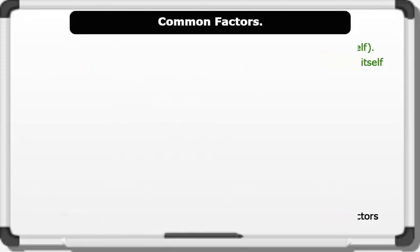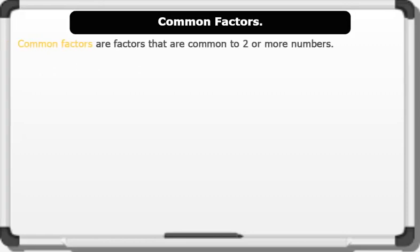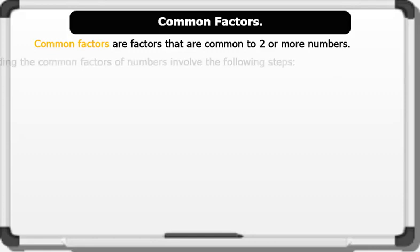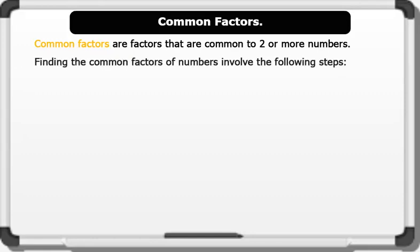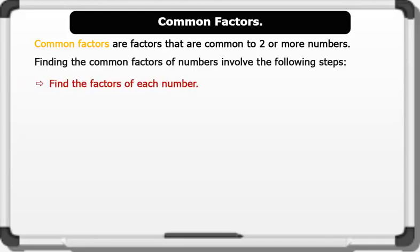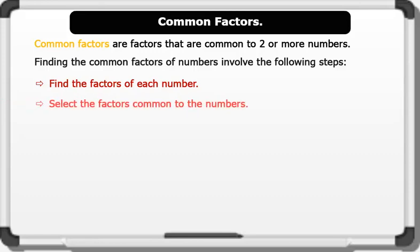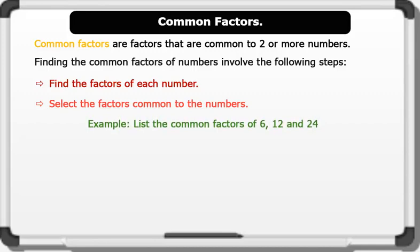Common Factors. Common factors are factors that are common to 2 or more numbers. Finding the common factors of numbers involves the following steps: 1. Find the factors of each number. 2. Select the factors common to the numbers. Let's see an example.